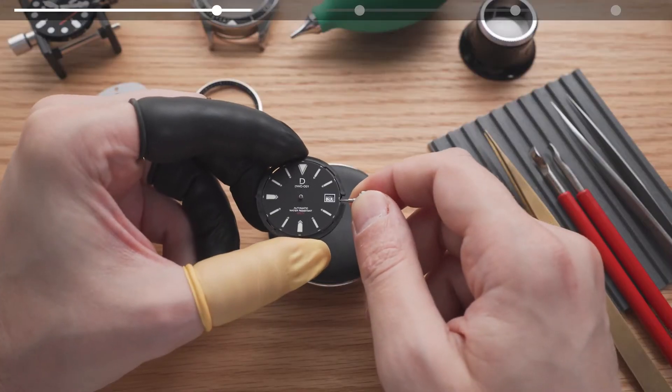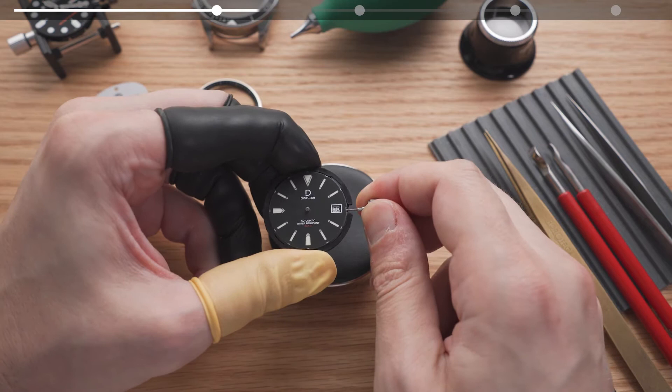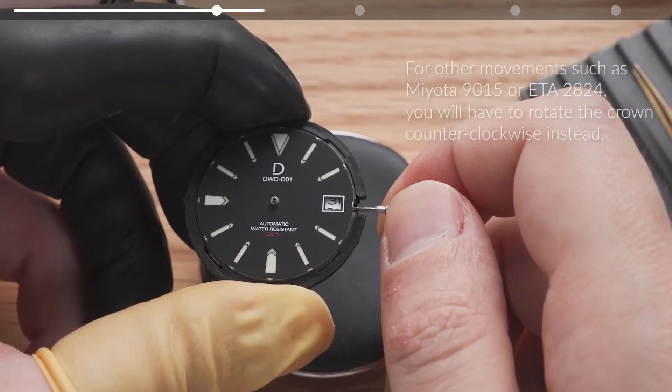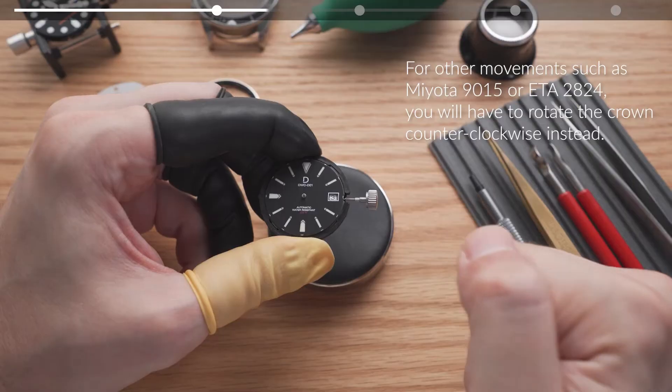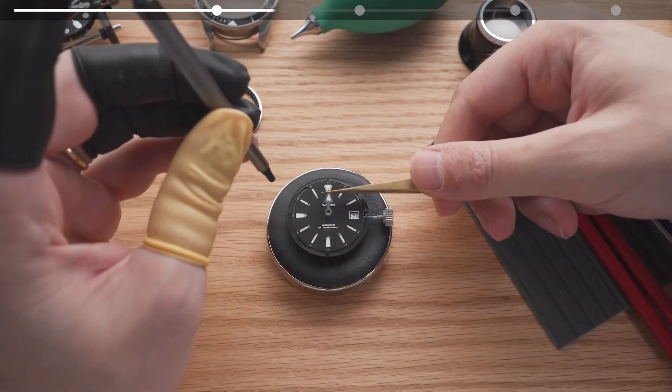If your movement has a date function, pull the crown all the way out to the time setting position and adjust the time forward until the date time transitions. Once the date ring completes its jump, we install the hour hand pointing it sharply at 12 o'clock.